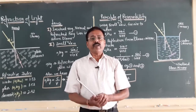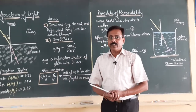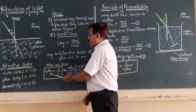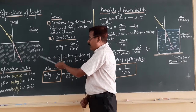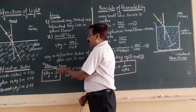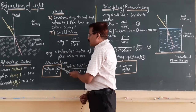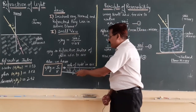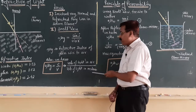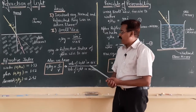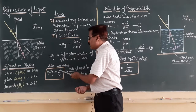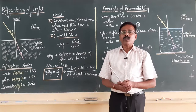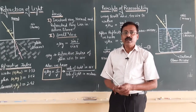The cause of the refractive index is the change in the speed of light. Snell also defined the refractive index of a medium with respect to air. Taking the example of air and glass, a-mu-g equals c divided by v, where c is the velocity of light in air and v is the velocity of light in the medium. In other words, the refractive index is also defined as the ratio of the velocity of light in air to the velocity of light in that particular medium.